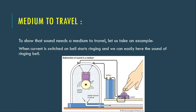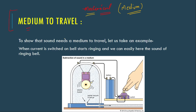So let's start with the topic of sound needing a medium to travel. Sound is a mechanical wave, and a mechanical wave needs a material medium for propagation. If there is a mechanical wave, it needs a medium to travel — without a medium, it will not be able to travel. So to show that sound needs a medium to travel, let us take an example.